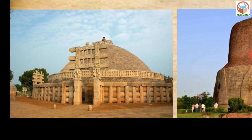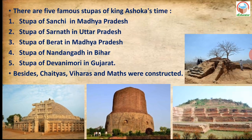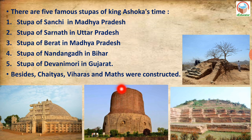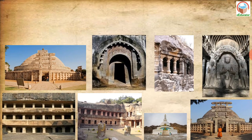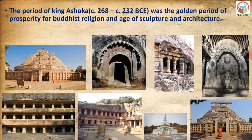You can see here the different Stupas — the Stupa of Sanchi, the Stupa of Sarnath in Uttar Pradesh, the Stupa of Devani Mori in Gujarat, and the Stupa of Nandangarh in Bihar. The period of King Ashoka, from 268 to 232 BC, was the golden period of prosperity for Buddhist religion, sculpture and architecture.